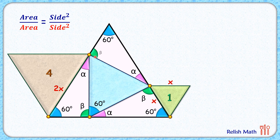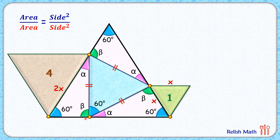The blue equilateral triangle has all sides equal, so these sides are equal to each other. By Angle-Side-Angle (ASA), we can say that all three surrounding triangles are congruent to each other. Since the triangles are congruent, their corresponding sides will be equal.